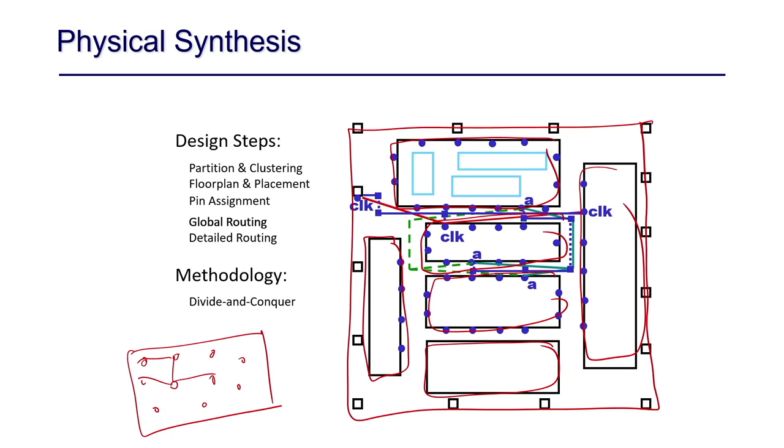Once placed, you recursively do the same process within every sub-block — taking each block, sub-partitioning it into further sub-blocks, placing them within that area, and continuing until you reach a very small portion where connections can be made automatically. When you cut a circuit into partitions, there are connections between sub-blocks that must be physically made — that process is called routing. Routing has two steps: global routing and detailed routing.